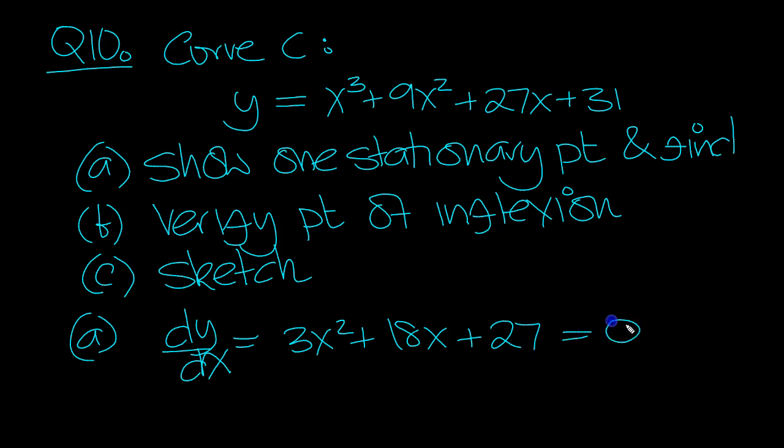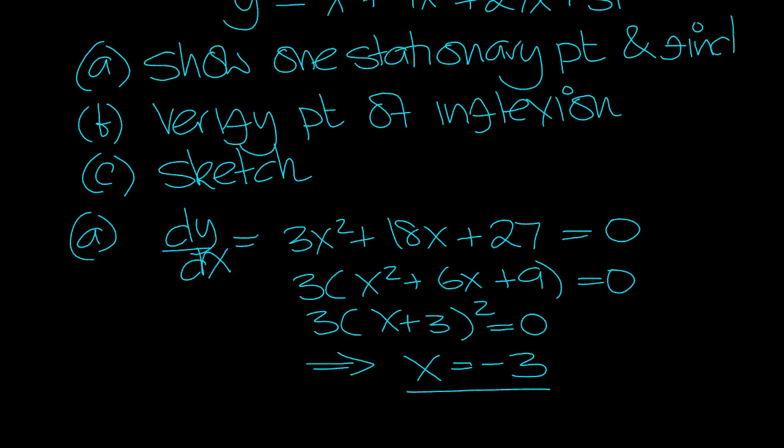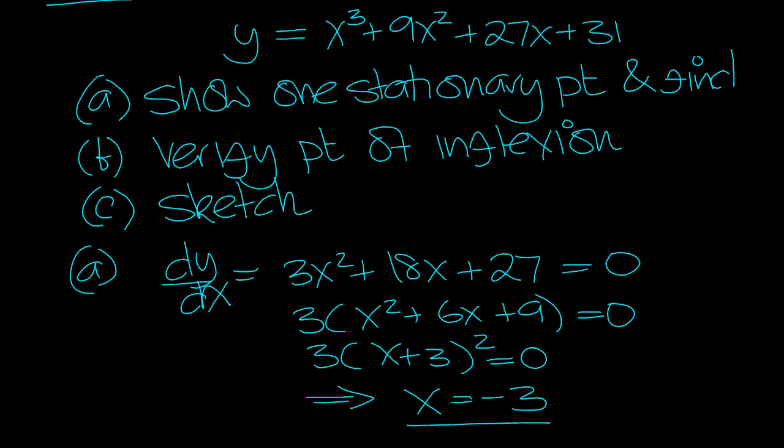Let it equal 0. This will go to 0, so there's a 3 outside: x² + 6x + 9, and that's (x + 3)² isn't it? So x = -3 is the stationary point. Now find the coordinates.